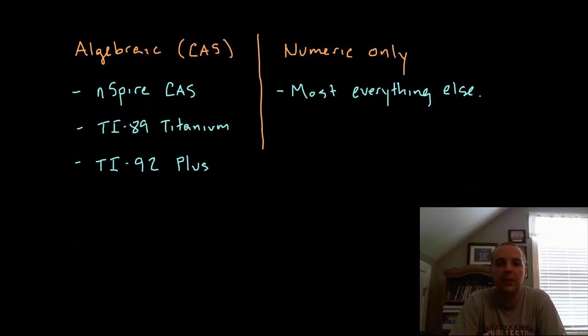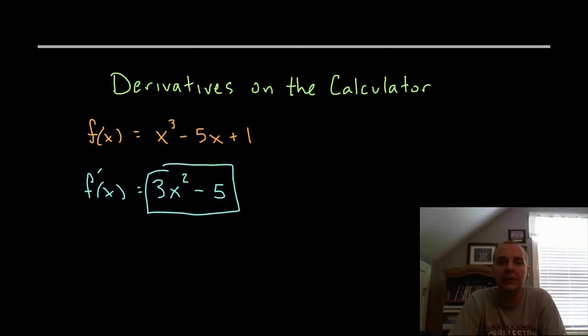And it turns out some calculators have different capabilities. Only a handful of calculators can give symbolic derivatives, in other words if you were to give it x cubed minus 5x plus 1, there's only a handful of calculators that can give you 3x squared minus 5, the symbolic derivative of a given function.